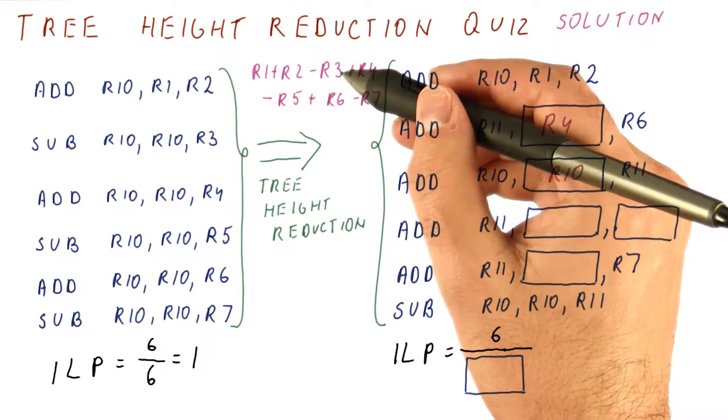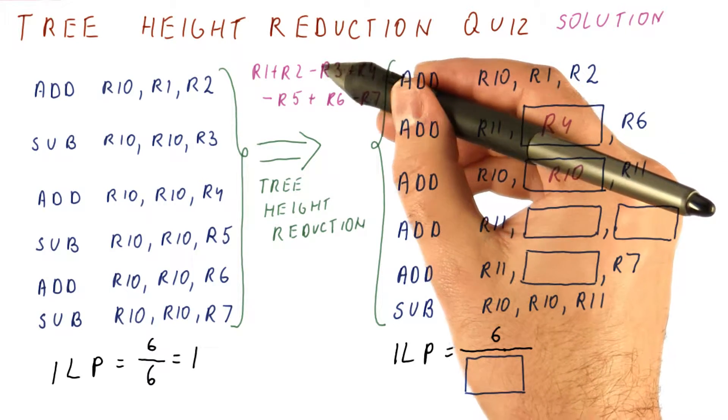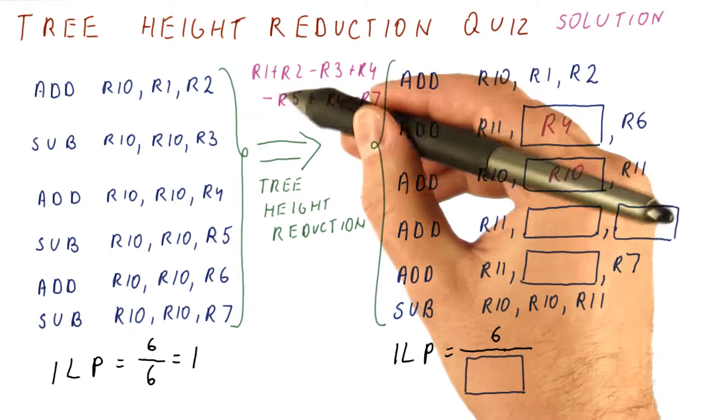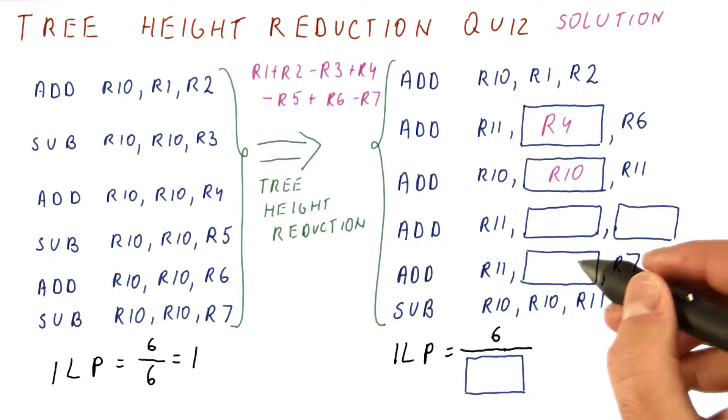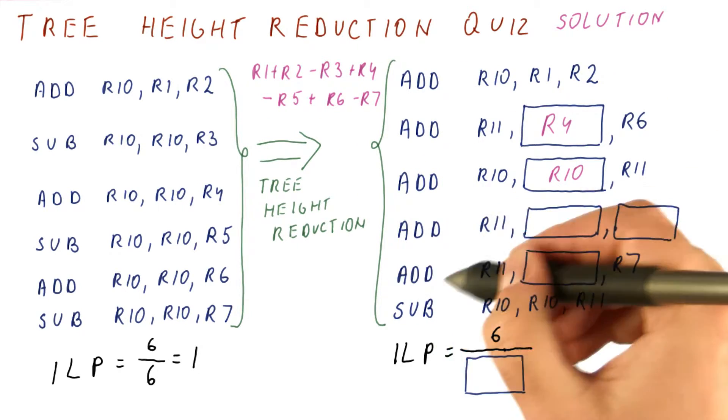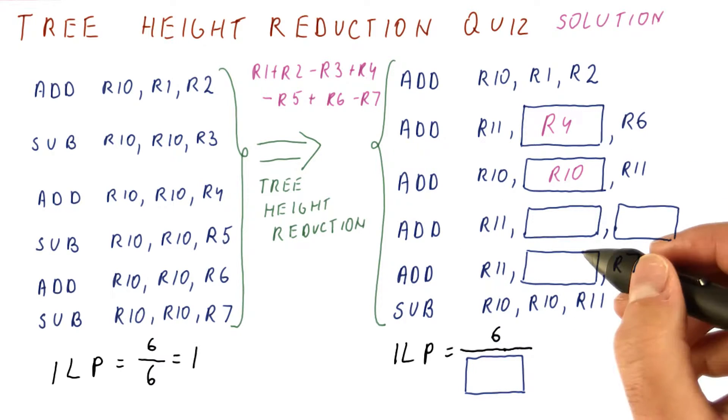So what we're going to do is we're going to add up R3, R5, and R7, and then subtract that from our R10. That's why we have two adds here.